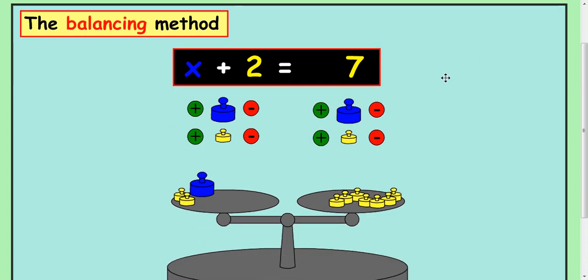So if we have this equation here, x plus 2 equals 7. Instead of thinking about covering the x up, we try to think of it as a set of scales. x plus 2 on one side. Here I'm using x as blue and the 2 bits as the 2 here. And on this side of the scales I've got 7 pieces, so I'm going to use that as a 7 there.